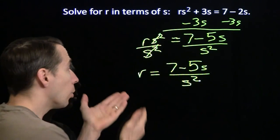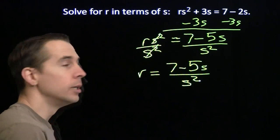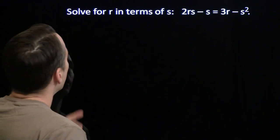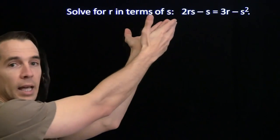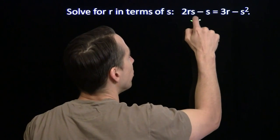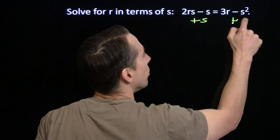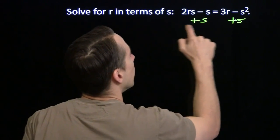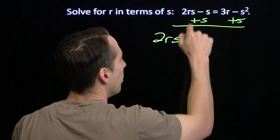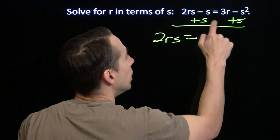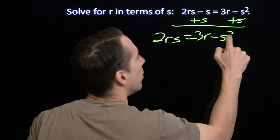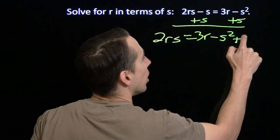Let's try one more, make sure we have this down. Solve for r in terms of s. Again, we're trying to get r all by itself. We'll start off the same way we did before. We'll just add the s to both sides. And we'll get 2rs, because the minus s and the plus s will cancel, equals we have a bunch of terms over here now, 3r minus s squared plus s.